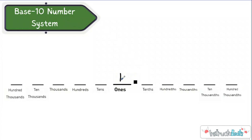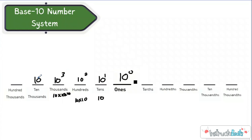And our place values are all based on our powers of ten. Ten to the second power is ten times ten. Ten to the third power would be ten times ten times ten, which is a thousand. Ten to the fourth power — ten times ten times ten times ten — which is the ten-thousands place. And ten to the fifth power would be a hundred thousand. There's a reason I'm writing the exponent form down here, and we'll talk about that in a second.